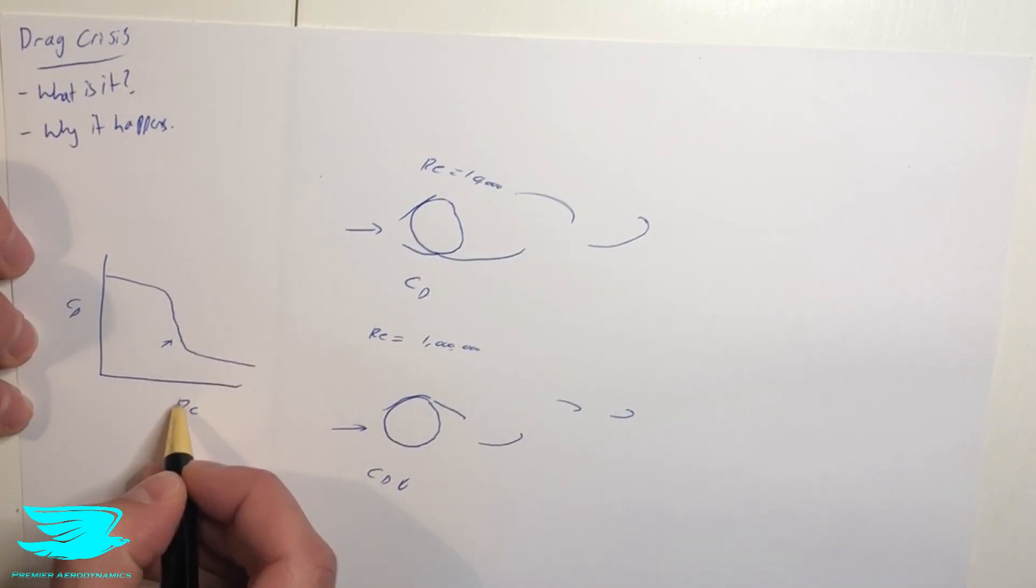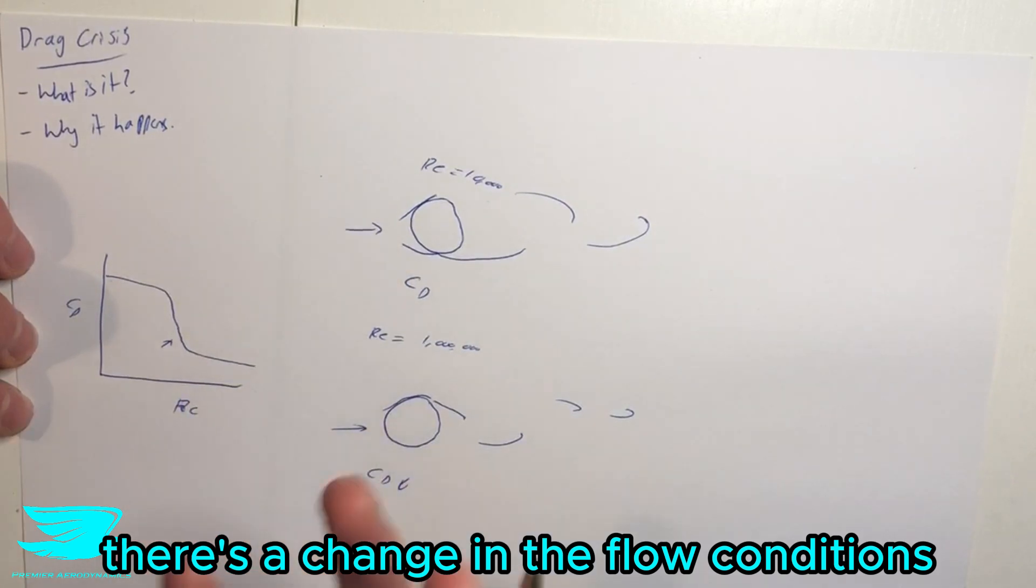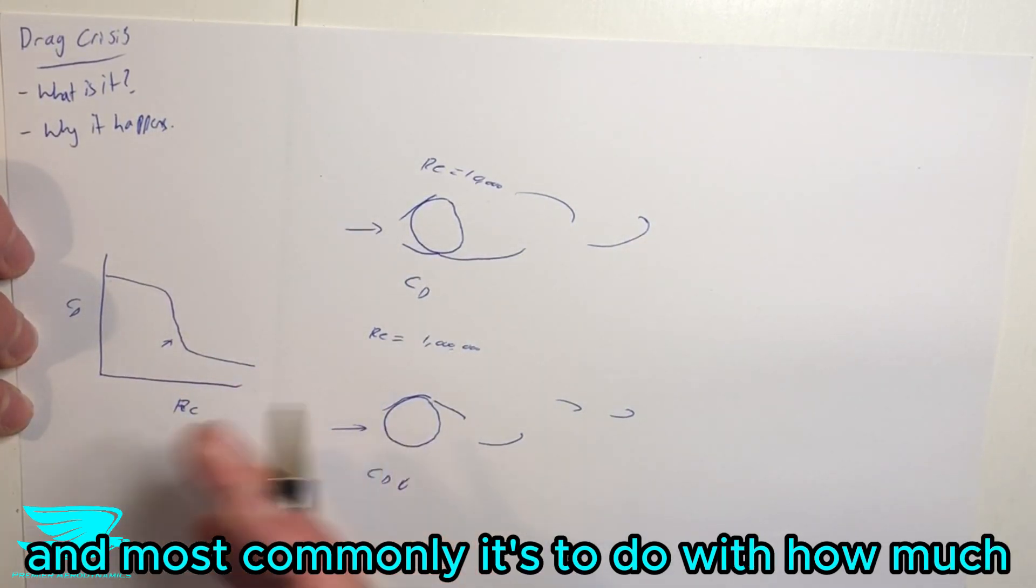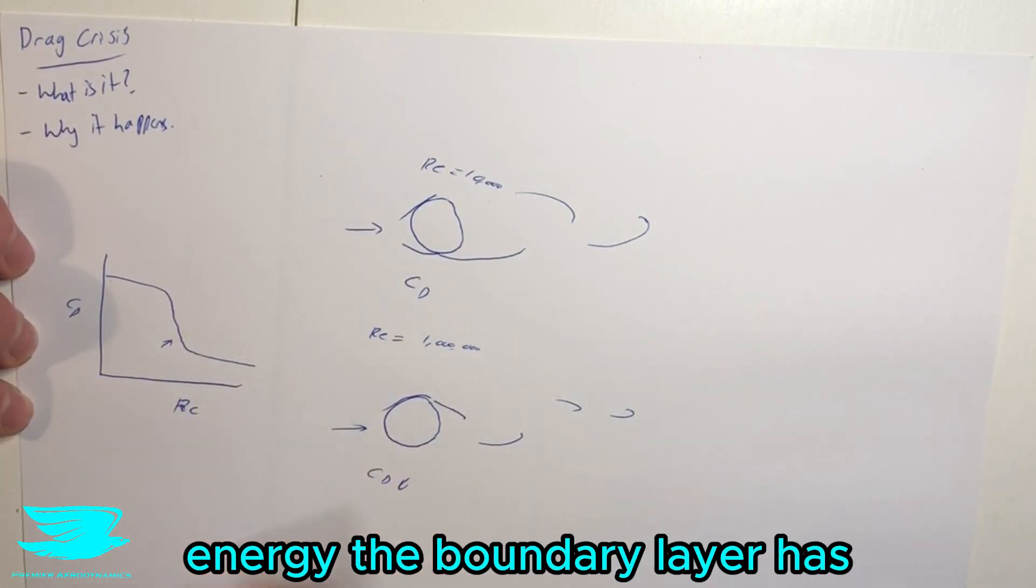And the reason why this happens is because generally speaking, there's a change in the flow conditions. And most commonly, it's to do with how much energy the boundary layer has. As I mentioned here,